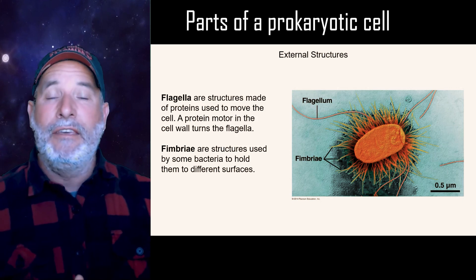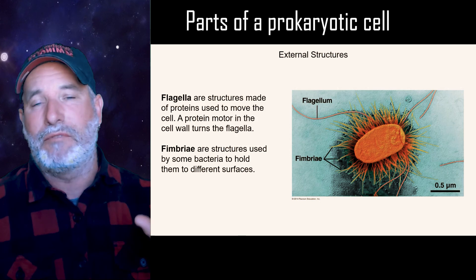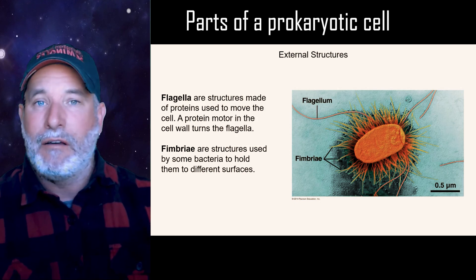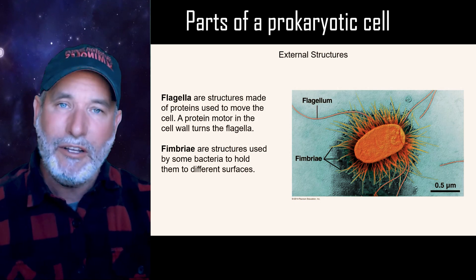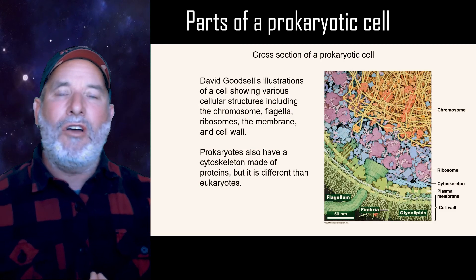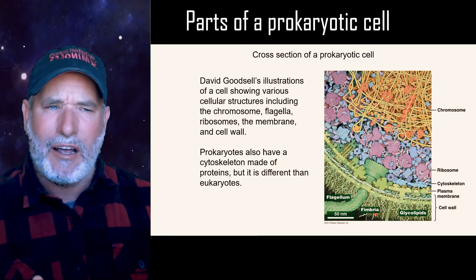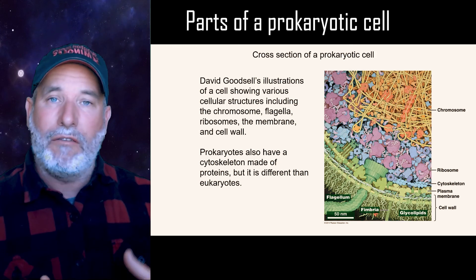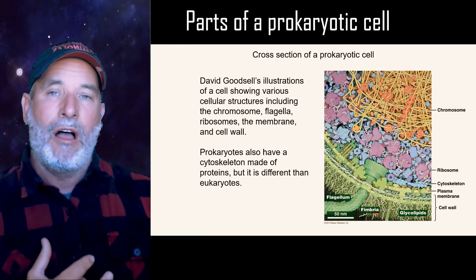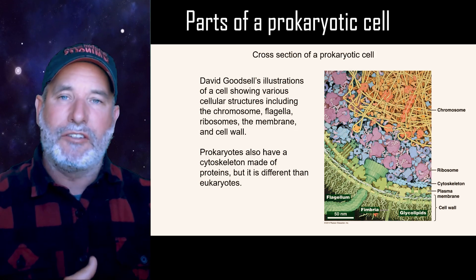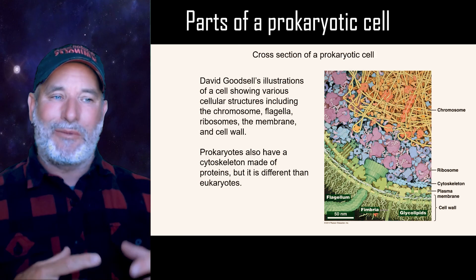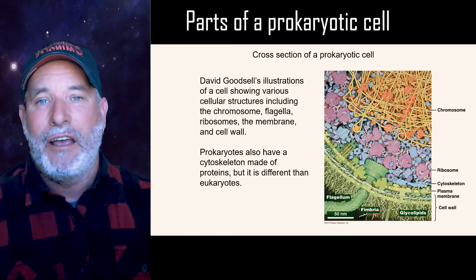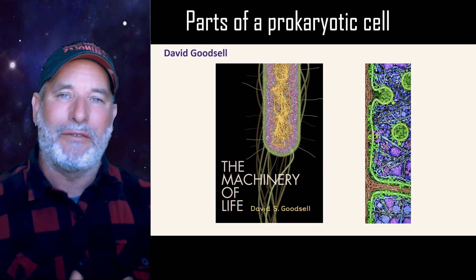Some bacteria also have fimbriae — structures that allow bacteria to attach very well to surfaces or to each other. This has implications for medicine because biofilms in a laboratory can be really hard to get rid of. David Goodsell's illustrations beautifully show all the different types of molecules and cellular structures — the membrane, cell wall, flagella, ribosomes, chromosomes, and various other molecules inside the cell — making it clear that these things are really complex. He has a book called The Machinery of Life.